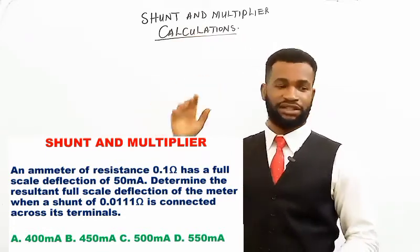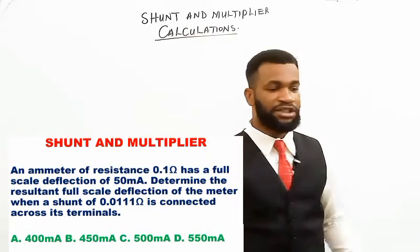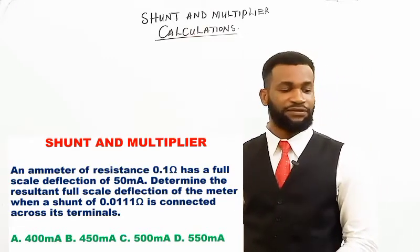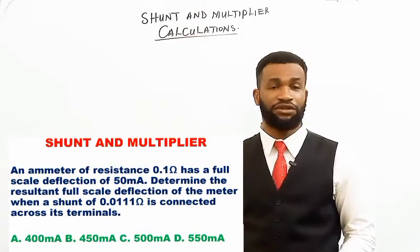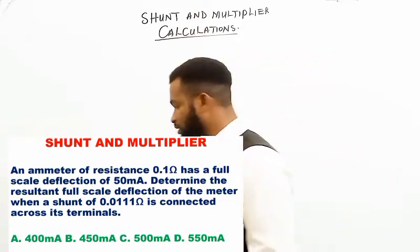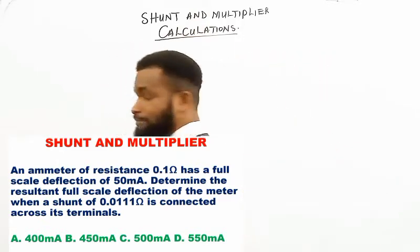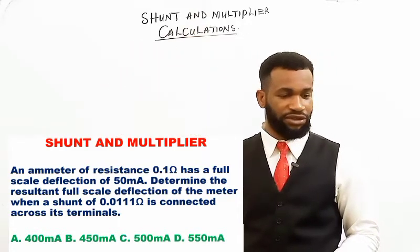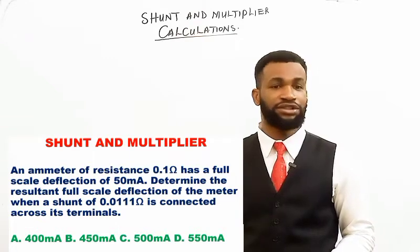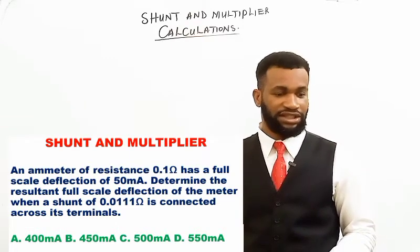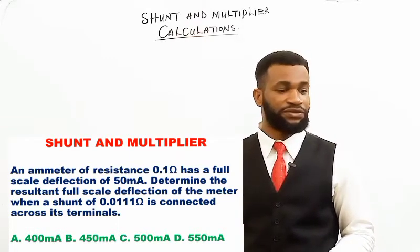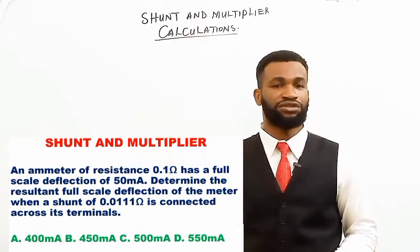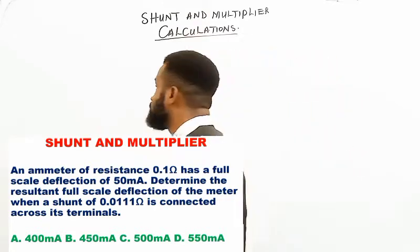We are told that an ammeter of resistance 0.1 ohm has a full scale deflection of 50 milliamperes. This question is talking about shunt — we need to determine the full scale deflection of the meter when a shunt is connected.